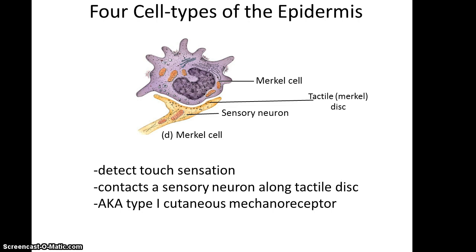The Merkel cells detect the touch sensation, so they are a receptor to something touching our skin. They contact an adjacent sensory neuron at their tactile disc — basically one part of their plasma membrane which is in contact with the sensory neuron. Another name for the Merkel cell is a type 1 cutaneous mechanoreceptor.